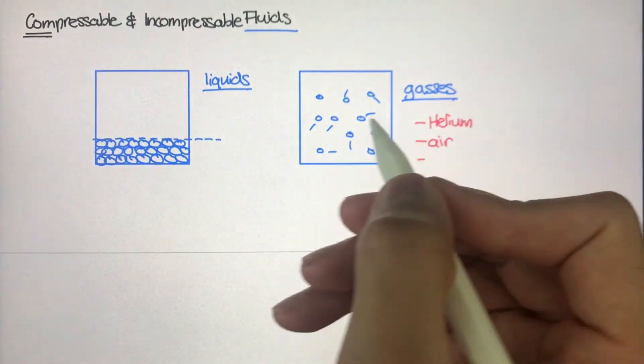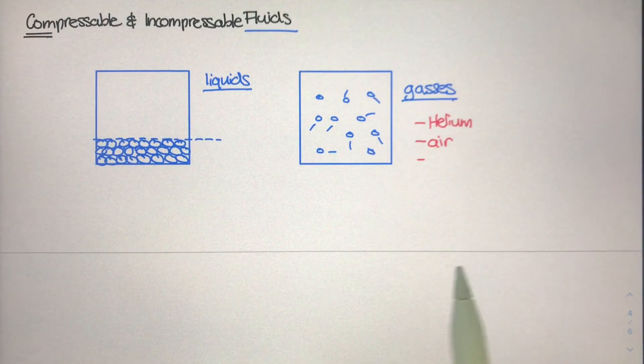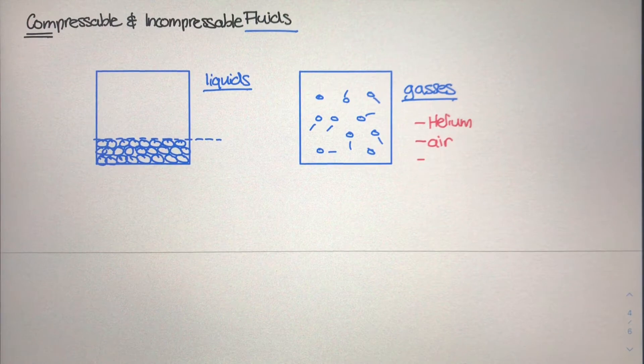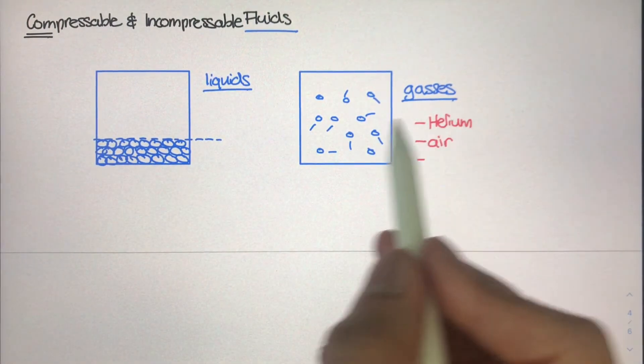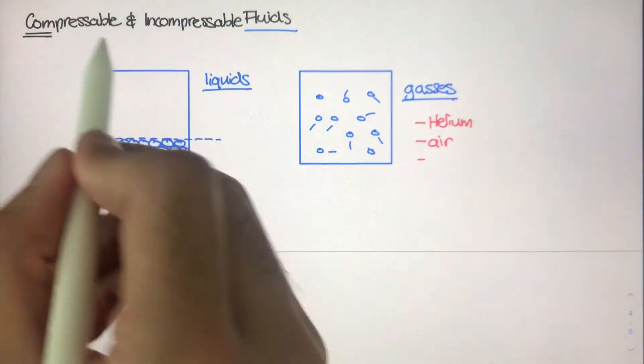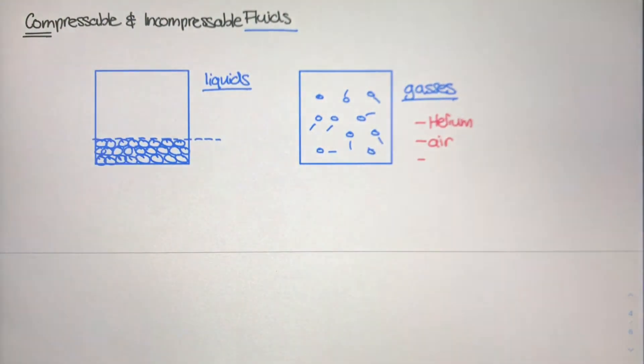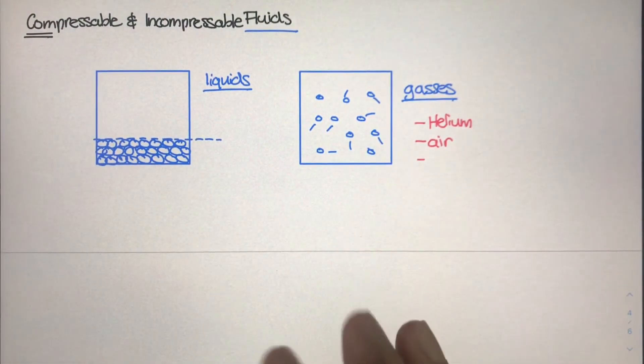And then you have stuff like liquids—you know, water is a liquid, chocolate milk is a liquid, a milkshake is a liquid. Main difference between liquids and gases are really liquids are incompressible and gases are compressible. So let's get to the core idea of what the study of fluids really is.